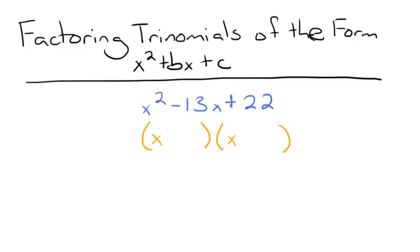Since the two numbers add to a negative number but multiply to a positive number, both numbers will have to be negative. So let's consider the factors of 22. We have 1 times 22 and 2 times 11.